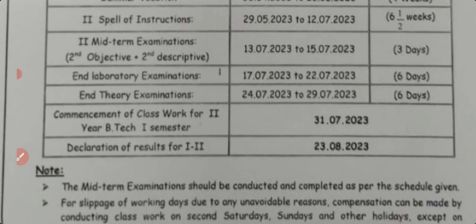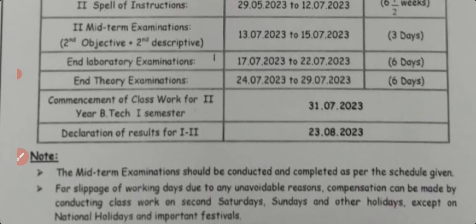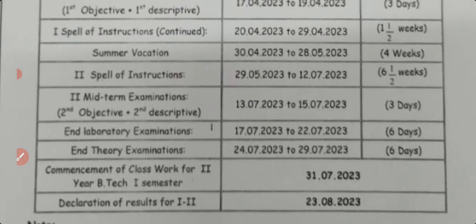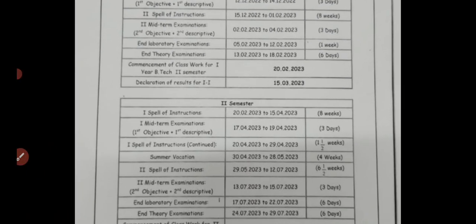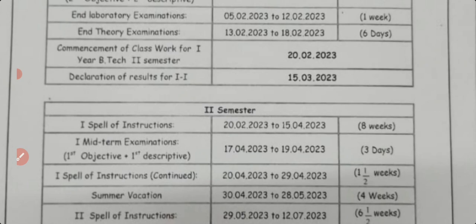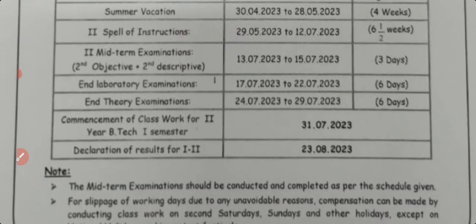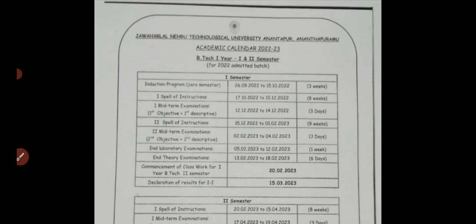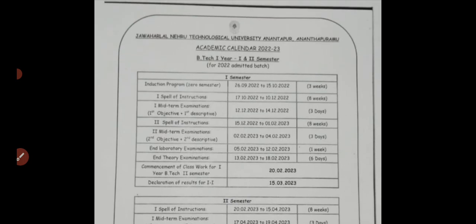After completion, commencement of classwork for second year B.Tech first semester starts from July 31st — just one day gap, then second year begins. Results for the second semester (first year) will be out around August 23rd. So note: first semester results come around March 15th, and second semester results come around August 23rd.